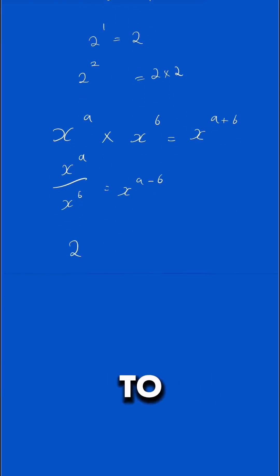Well, 2 to the power of 3 over 2 to the power of 2. Well, you minus the powers, and then that's going to be 2 to the power of 1, because 3 minus 2 is 1, which is just 2.